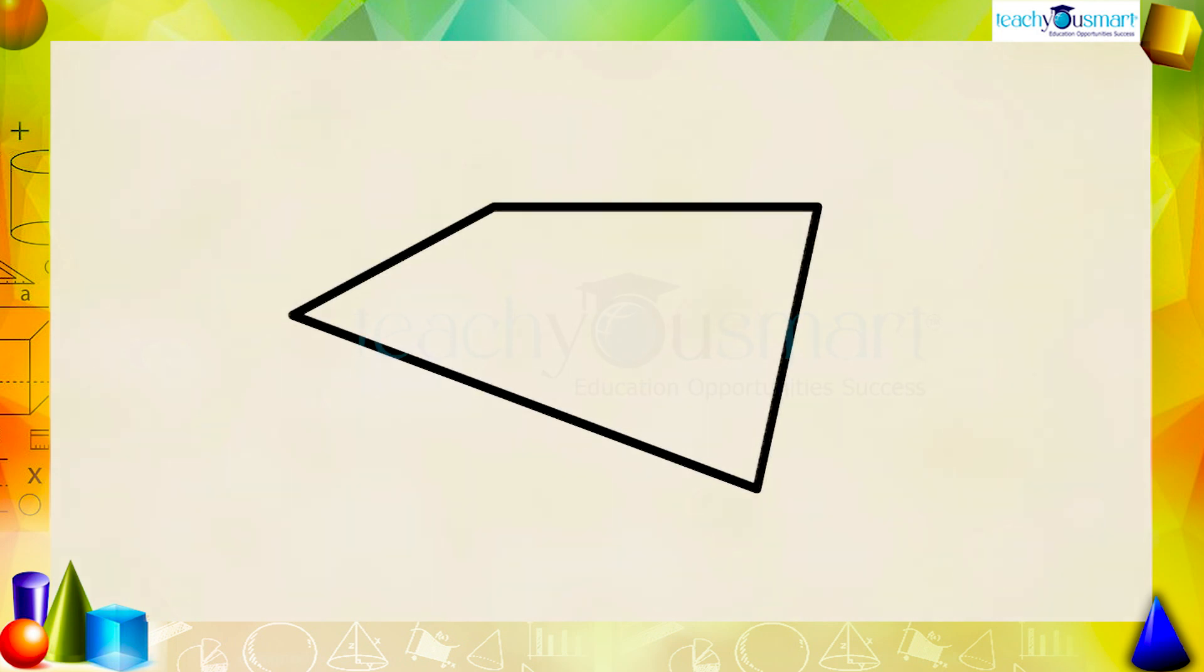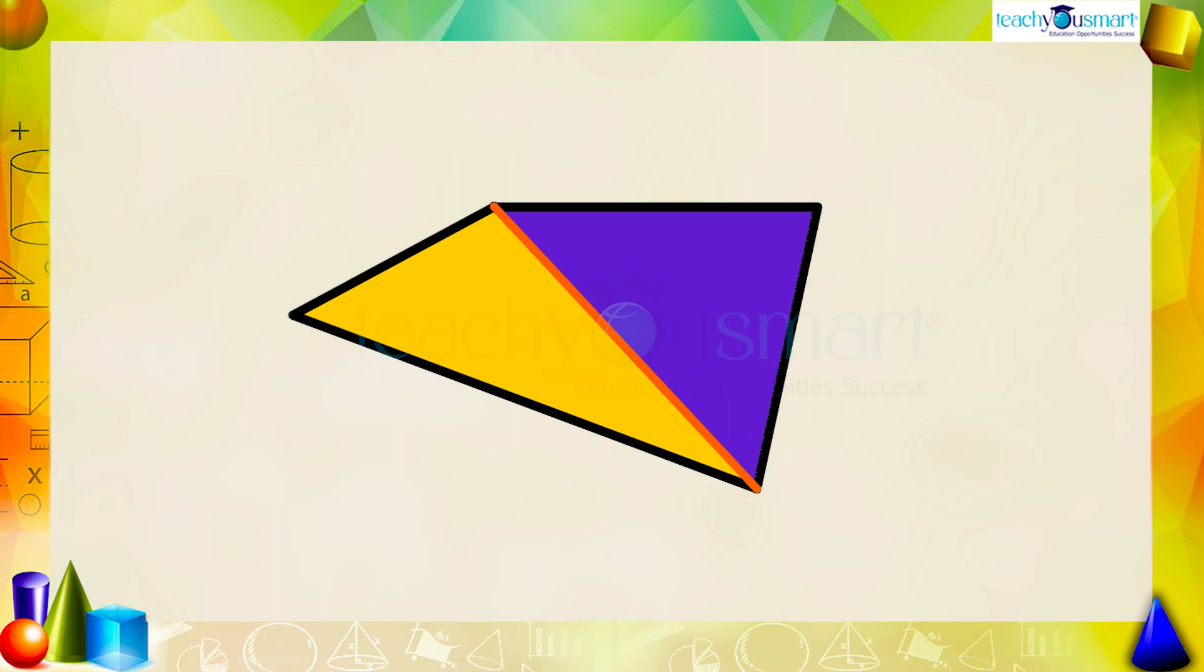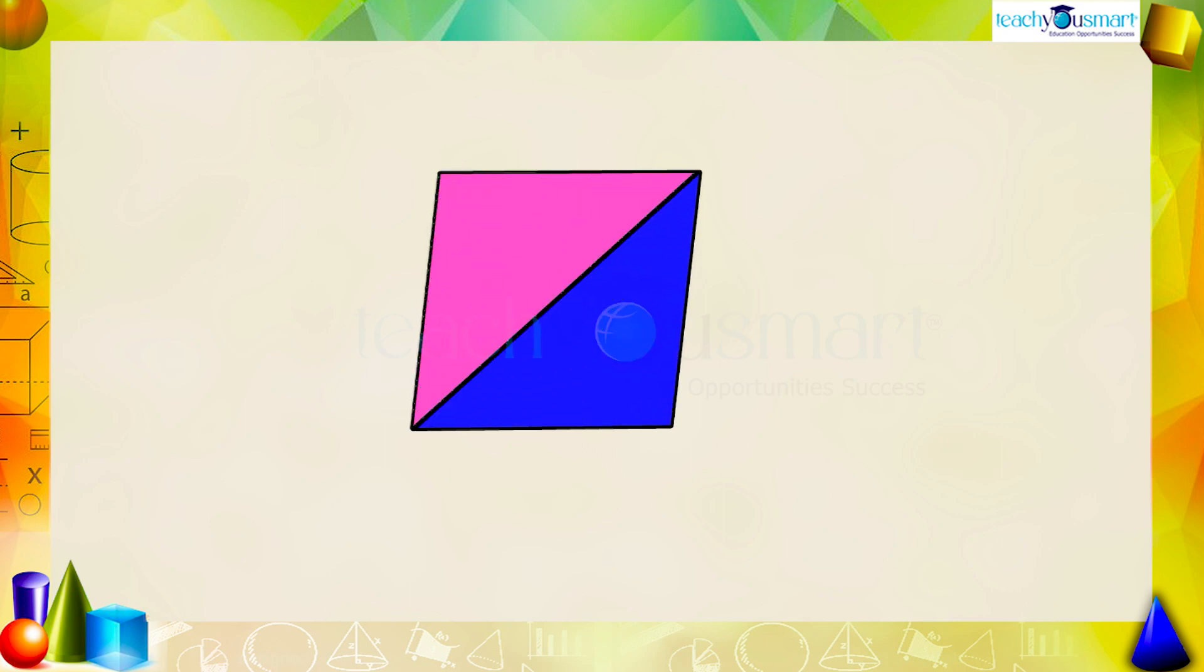We know that for finding the area of a quadrilateral, we need to divide it into two triangles. Here also we can use the same method. That is, the rhombus can be split into two triangles by drawing a diagonal.